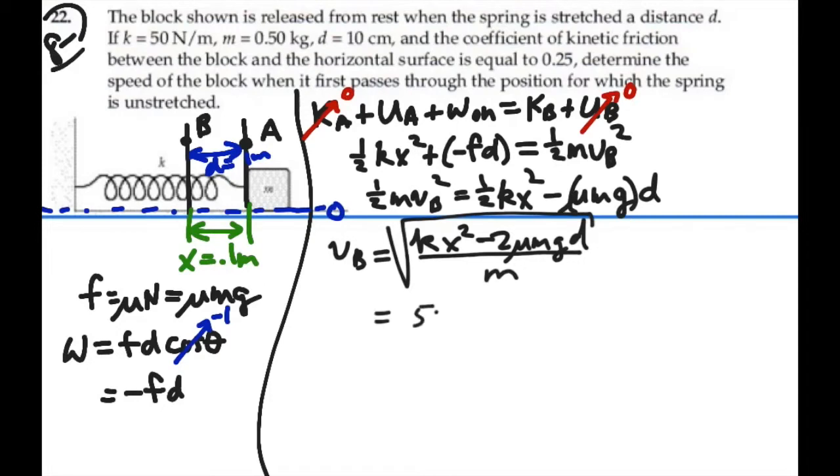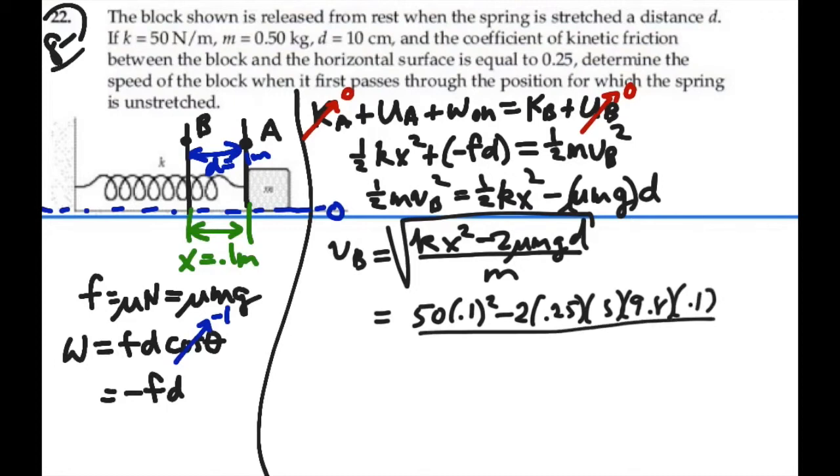So that's going to equal the square root of 50 times 0.1 squared minus two times mu, 0.25, times the mass, 0.5, times 9.8, times d, which is 0.1, over the mass, 0.5.